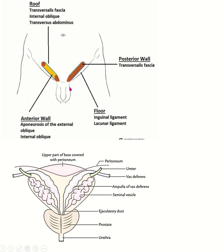Starting from the scrotum, it leaves and enters the superficial inguinal ring, then travels through the inguinal canal, then the deep inguinal ring, and ultimately reaches the abdominal cavity. It passes above the urinary bladder to the base of the urinary bladder, where it unites with the seminal vesicle to form the ejaculatory duct, which opens into the posterior wall of the prostatic urethra.